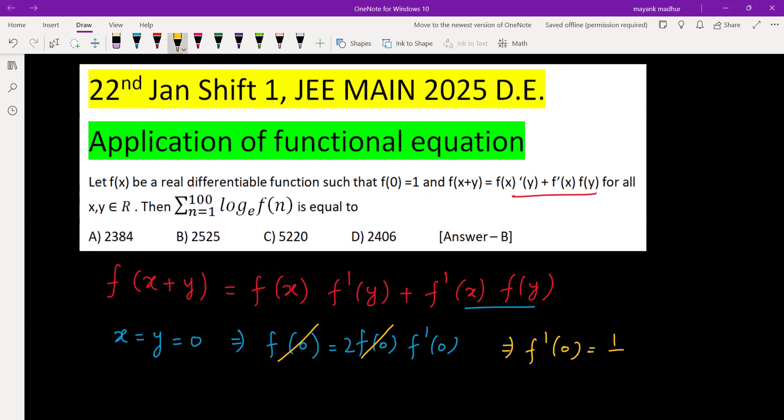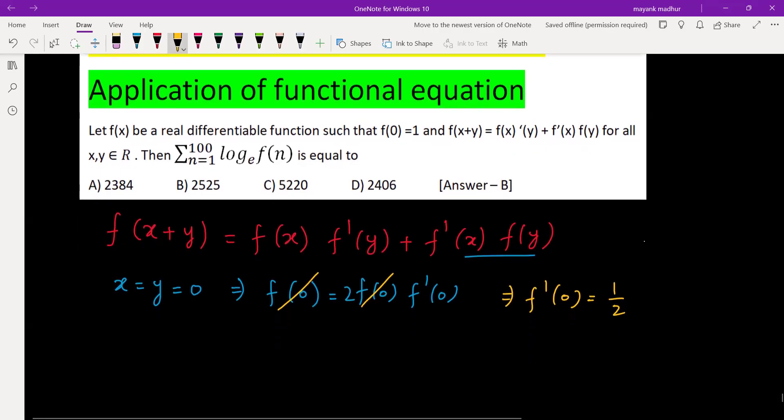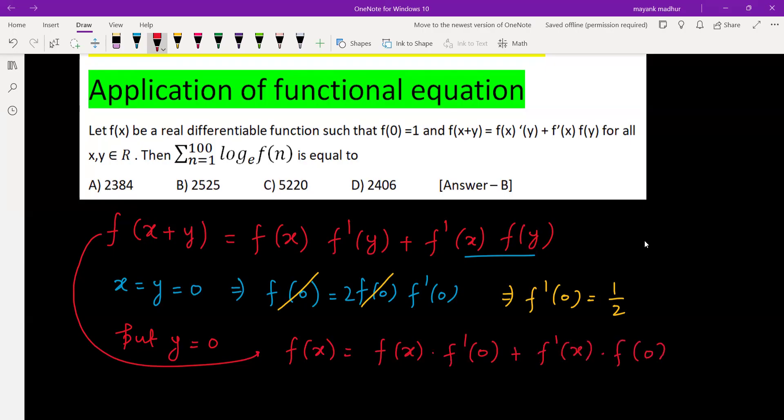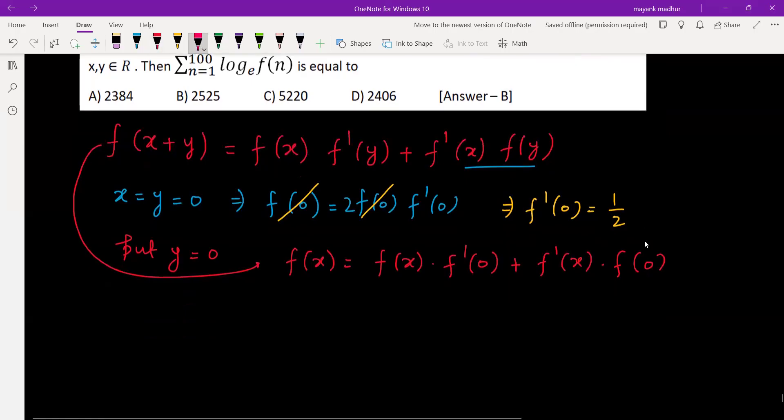Now put y = 0 in the original equation, which gives us f(x) = f(x)·f'(0) + f'(x)·f(0). We have both values: f(0) = 1 and f'(0) = 1/2. So we get f(x) = (1/2)f(x) + f'(x).